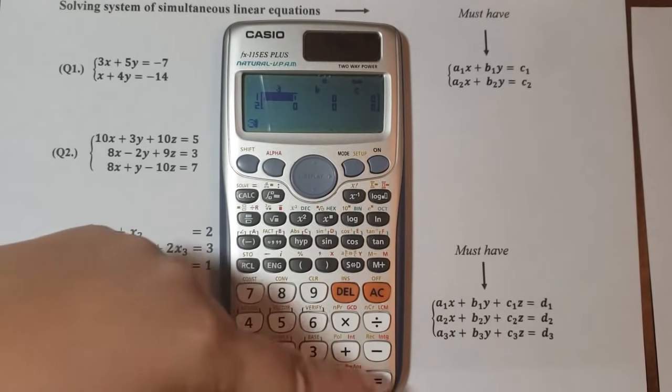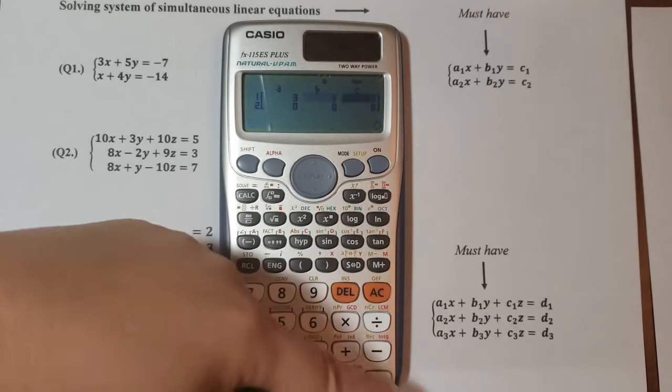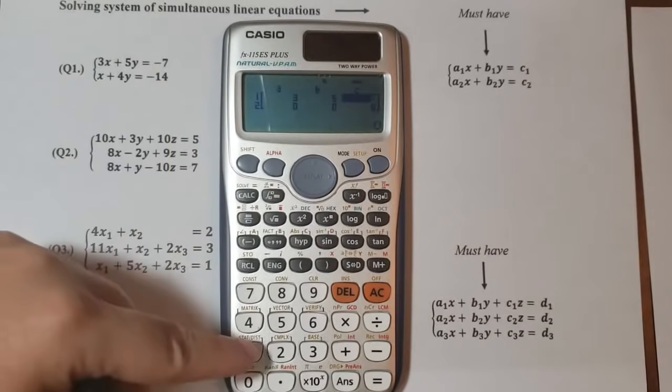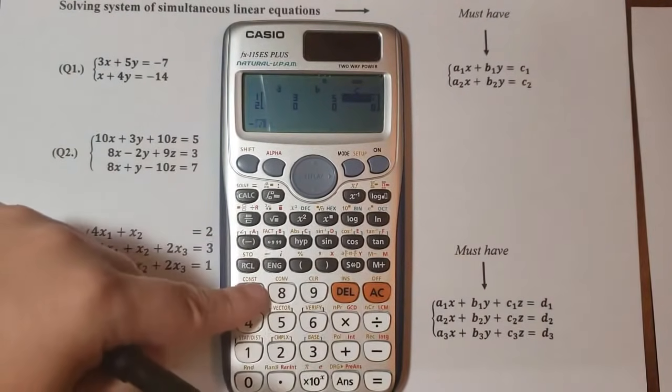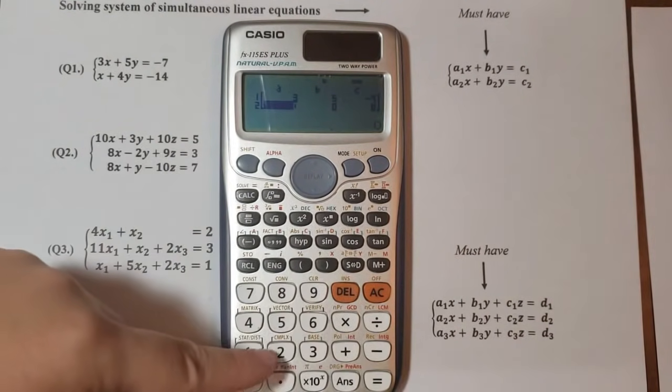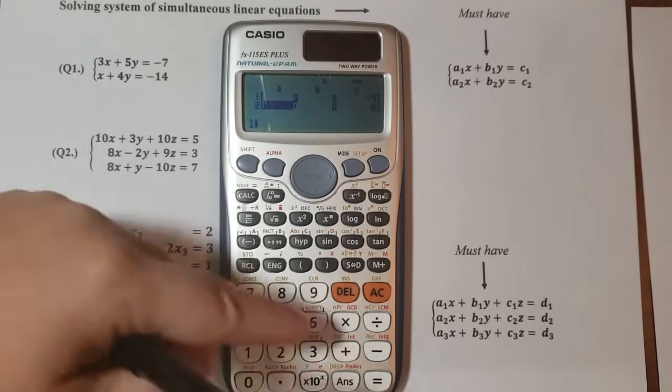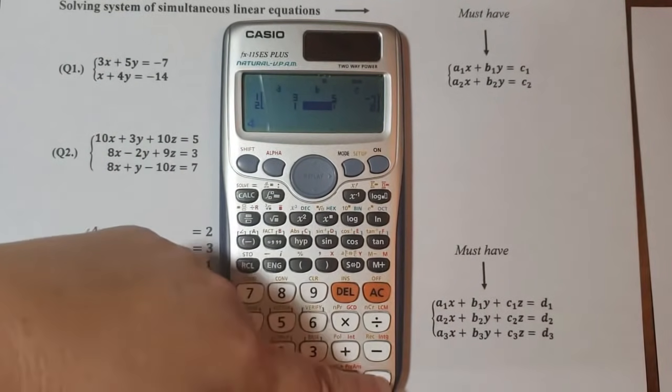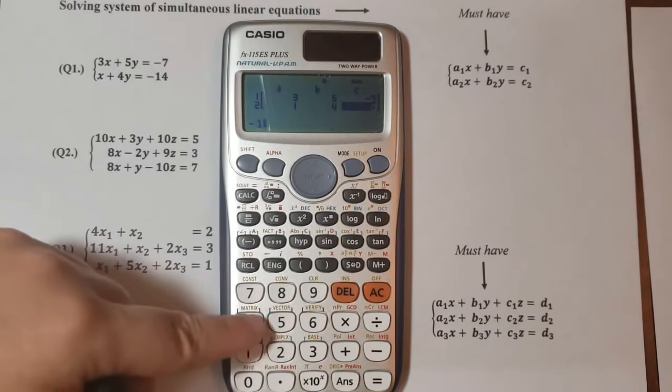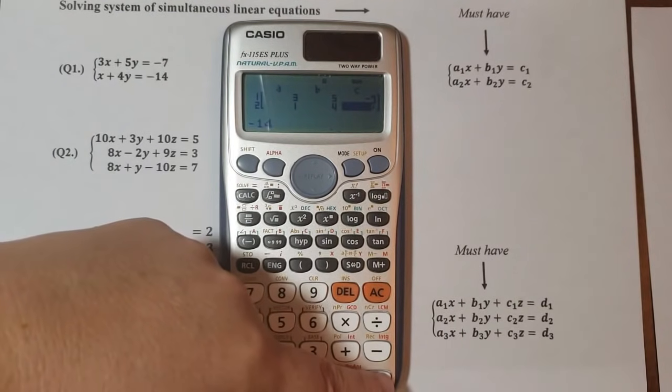3, equal, 5, equal, minus 7, equal, 1, equal, 4, equal, minus 14, equal.